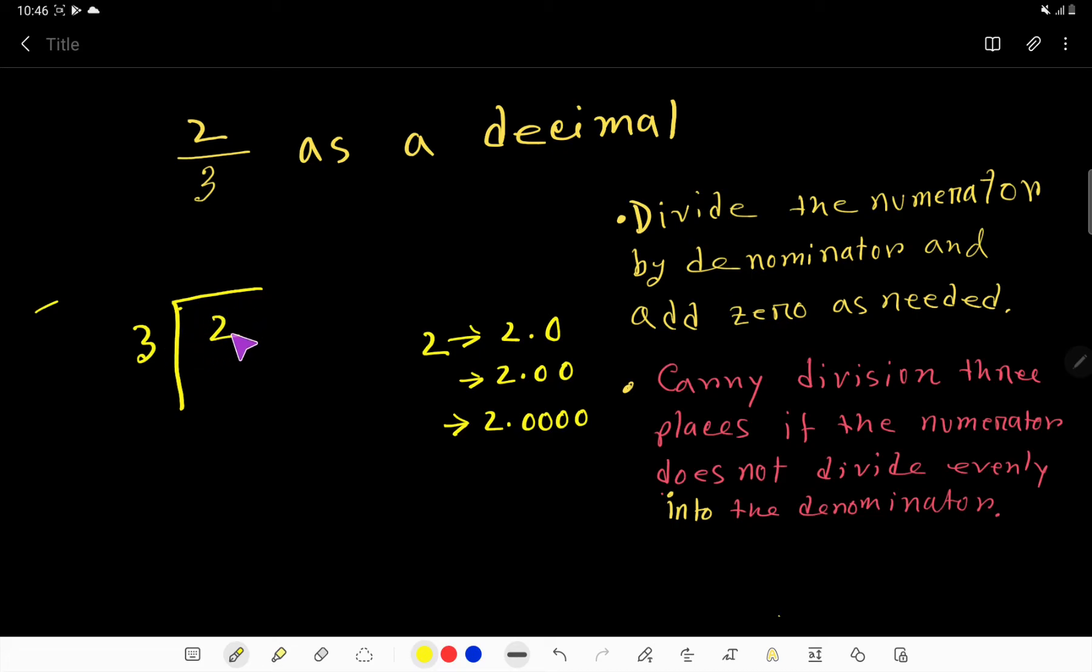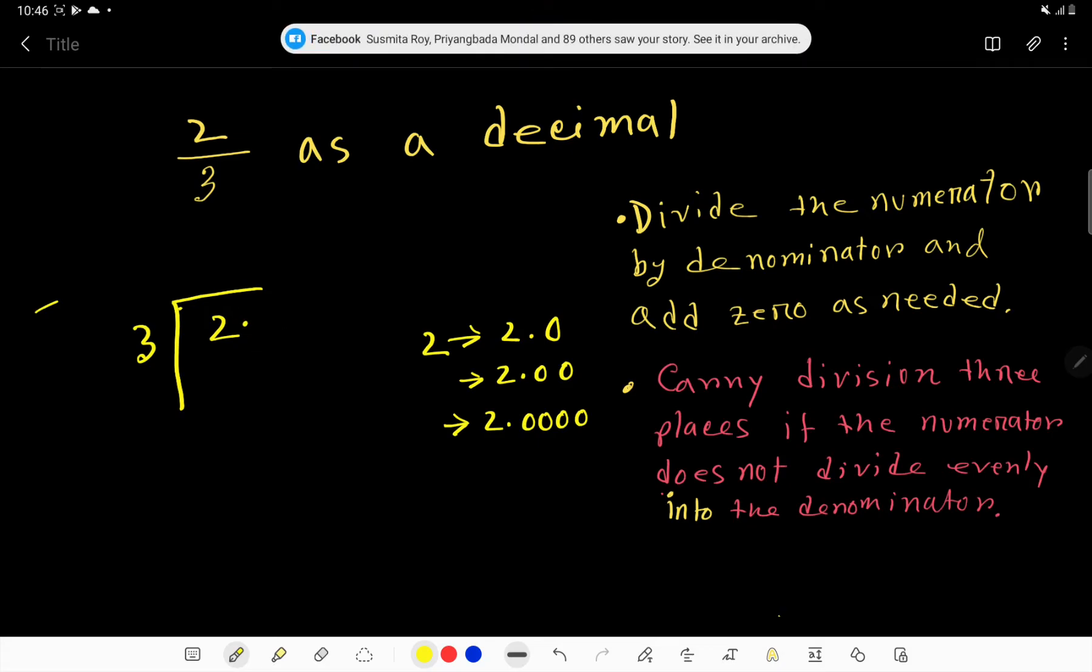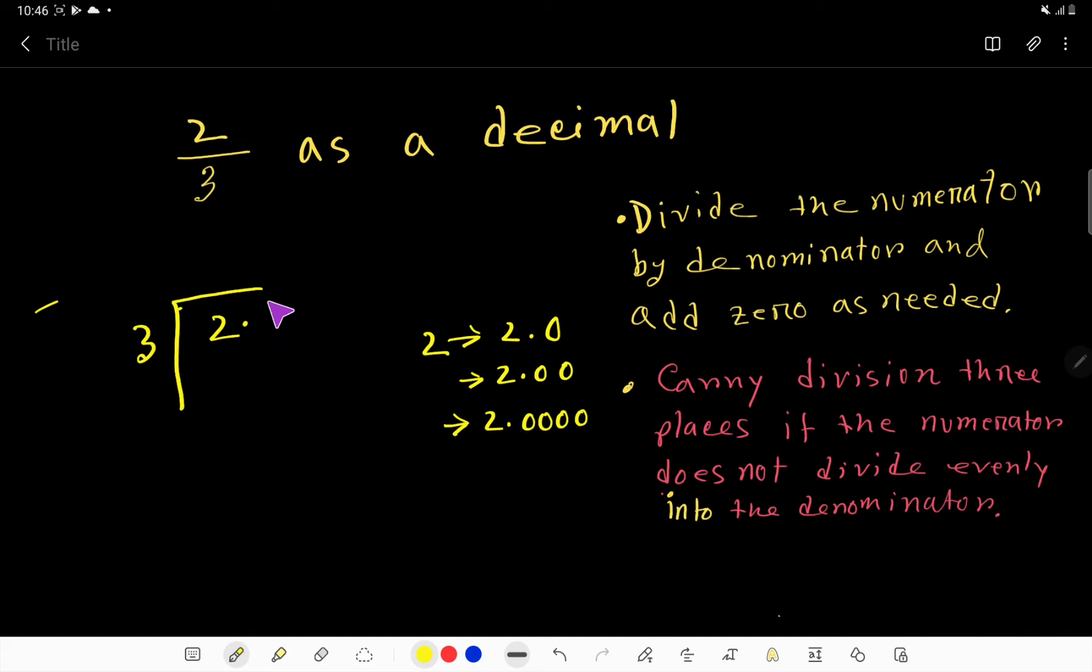Since this 2 is smaller than this 3, we can rewrite this. We can write here 2, and after 2 we can take any number of zeros. Three goes into 2 how many times? Actually, 3 does not divide these 2. That is, 3 goes into 2 zero times. Zero 3 times, you can say.